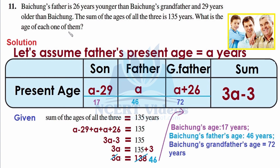The question asked for the age of each of them. Baichung's father's age is 46 years. Baichung's age is 29 years less than 46, which is 17 years. Baichung's grandfather's age is 26 years more than 46, which is 72 years. So the three ages are: Baichung = 17 years, father = 46 years, grandfather = 72 years.